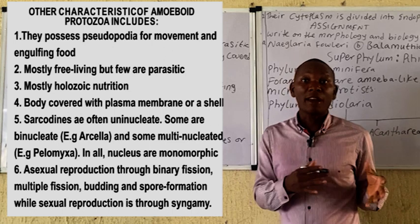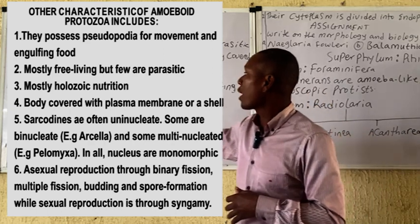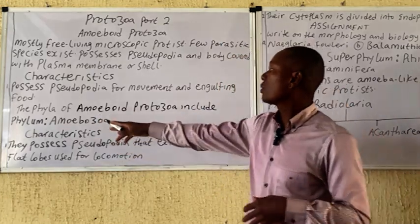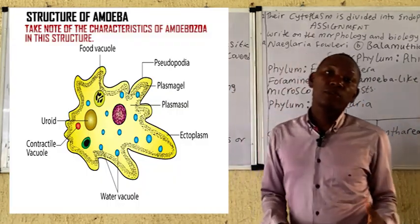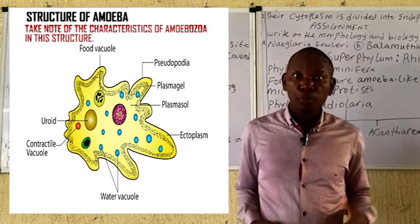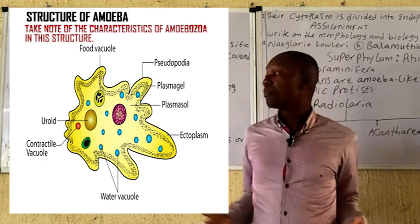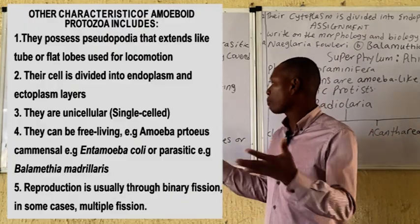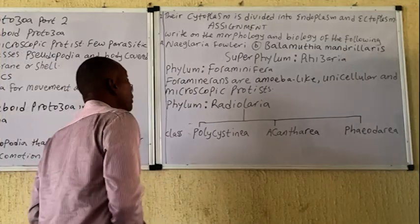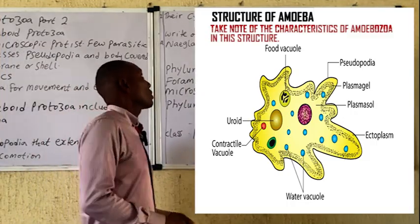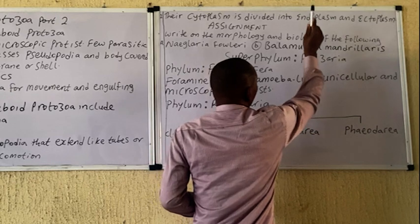The various phyla under the amoeboid protozoa include the phylum Amoebozoa. They are a group of organisms that possess pseudopodia, are shapeless, and their outer cover is usually the plasma membrane. They are heterotrophic, and their pseudopodia extend out and are used for locomotion.